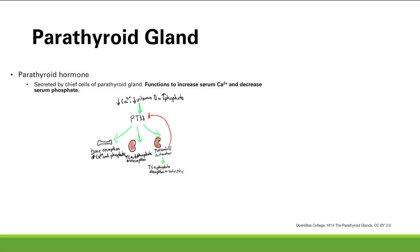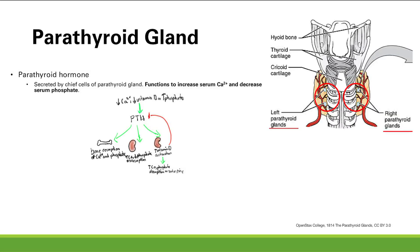The parathyroid gland makes parathyroid hormone. The parathyroid glands are located right around the thyroid — this is the thyroid right here, around our trachea. We have four parathyroid glands: two on the left, two on the right. They make parathyroid hormone, specifically the chief cells of the parathyroid gland.